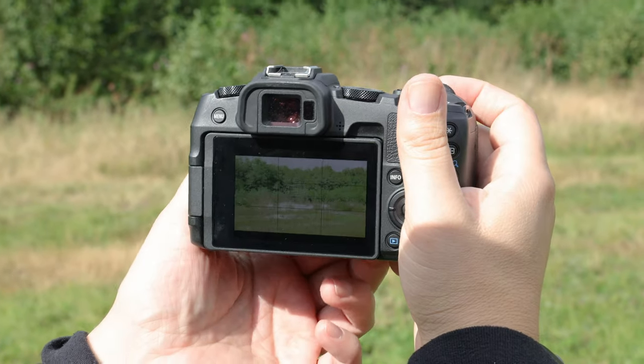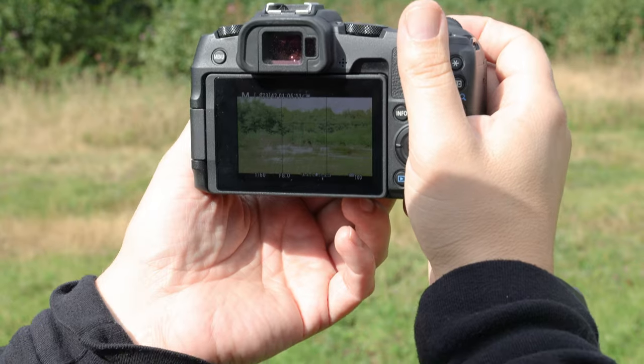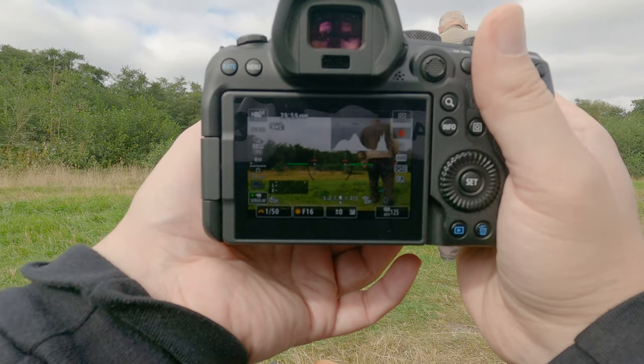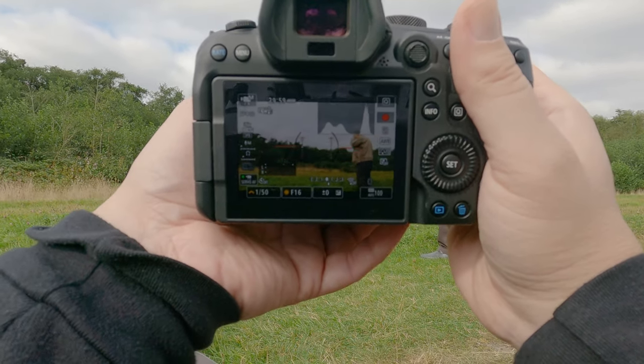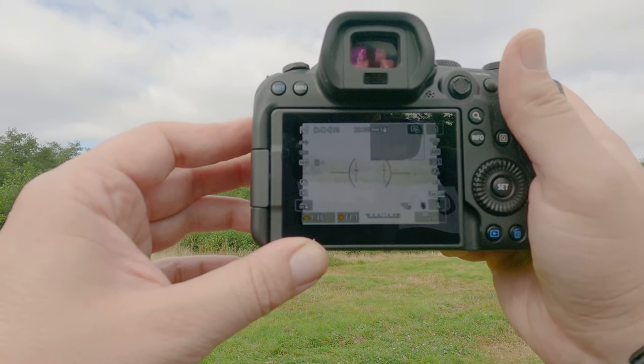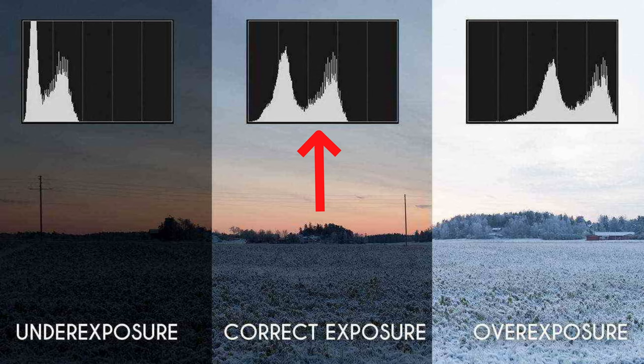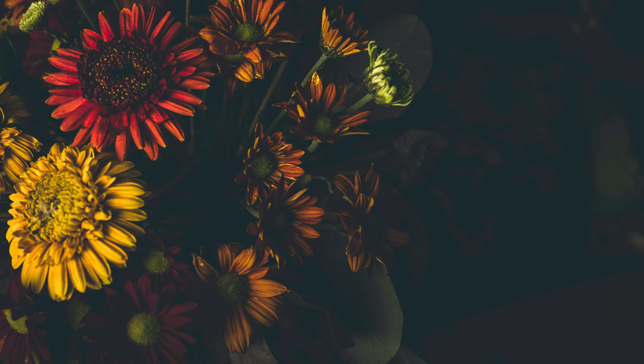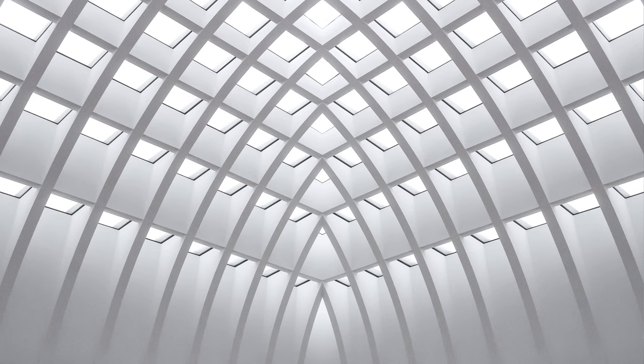Reading exposure from the camera screen — people starting out often look at the back screen to judge their exposure, but the camera screen has a brightness setting and won't show you how light or dark your image truly is. You always want to use your histogram instead. The histogram shows light areas, mid-tones, and dark areas. If the data is pushed too far right, it's too bright; too far left, too dark. A balanced histogram means good exposure — though of course you can bend these rules when creating a deliberate dark-and-moody or very bright stylistic look.